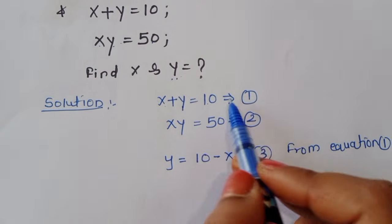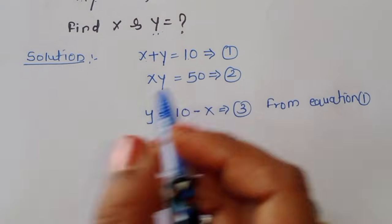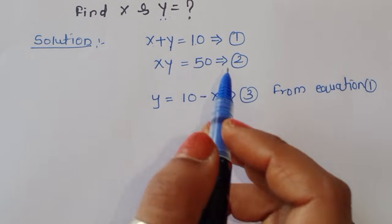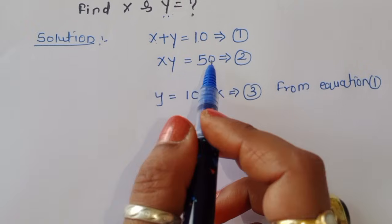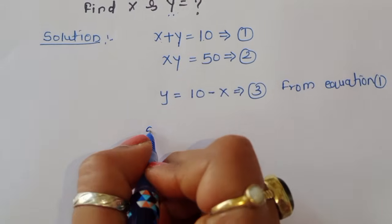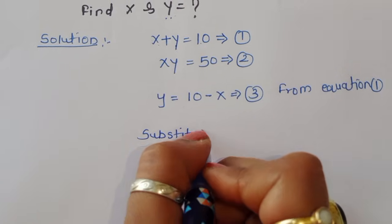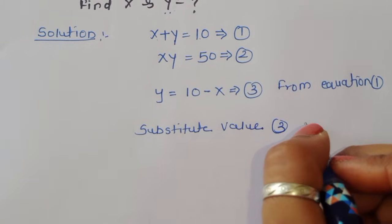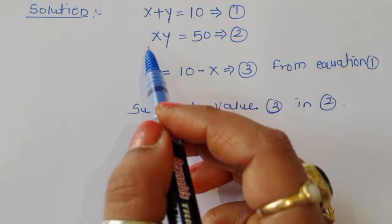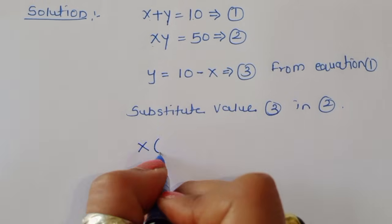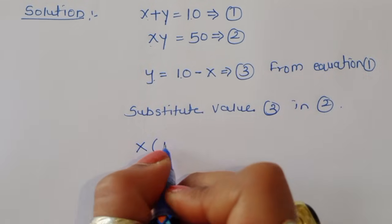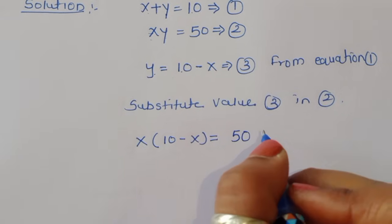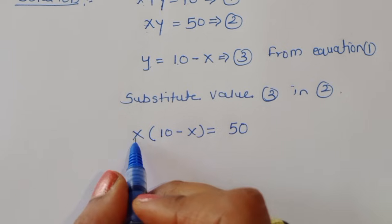Since y is equal to 10 minus x, and equation 2 is x times y is equal to 50, we substitute the value of y from equation 3 into equation 2. So x times (10 minus x) is equal to 50.